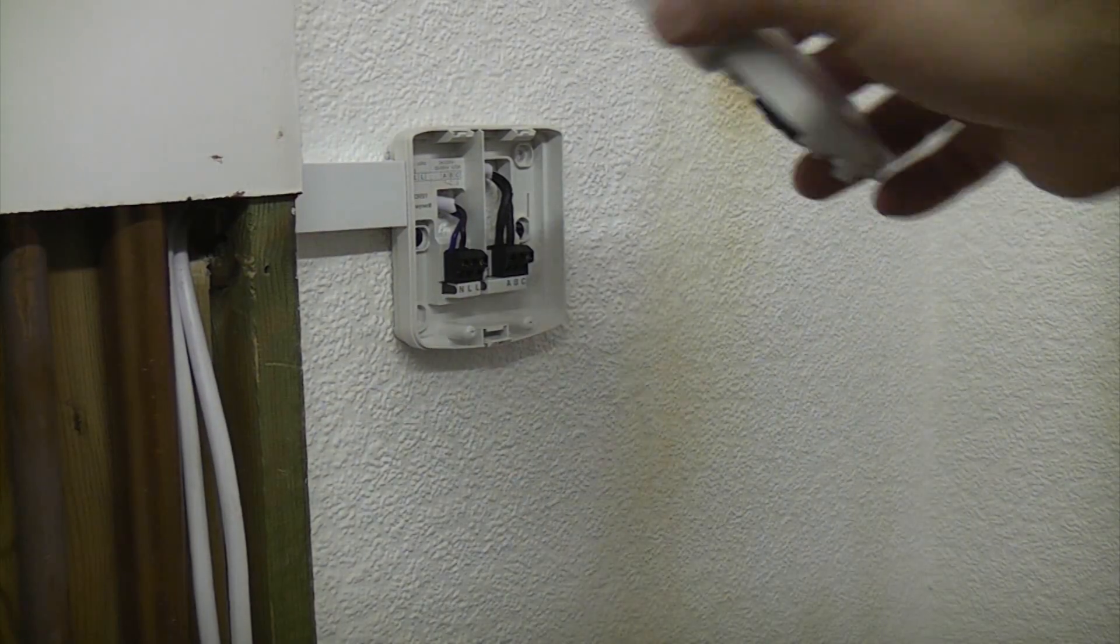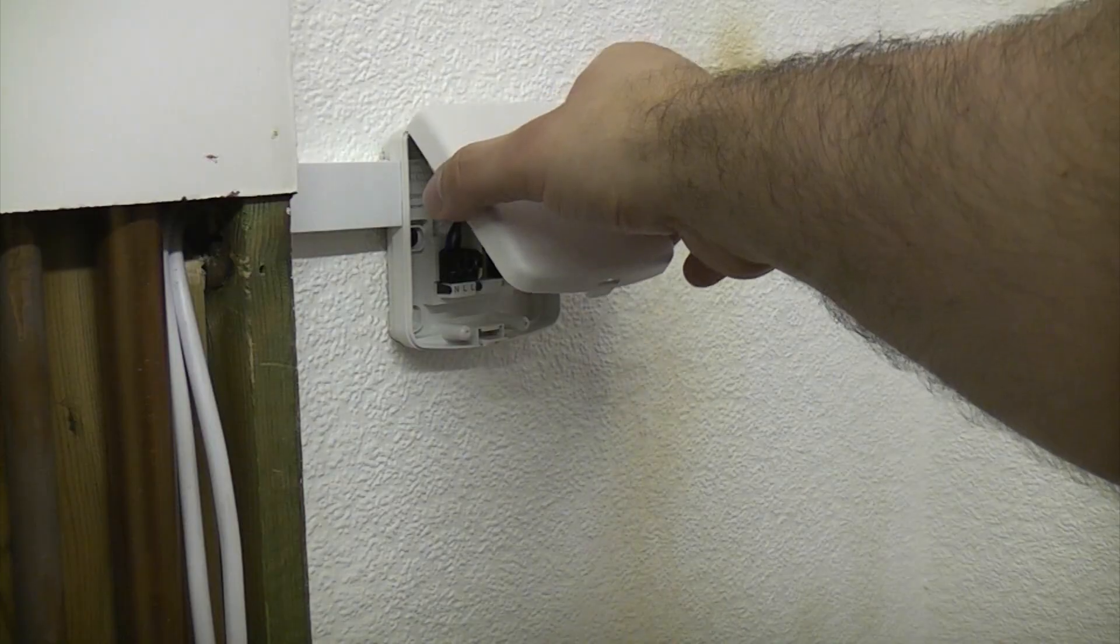So before I put the boxing back on the front of here, I will clip those cables so that they are out of the way. So now all we need to do is put the front on the relay box.